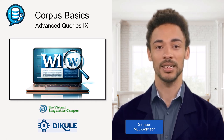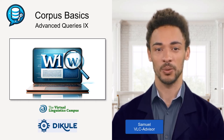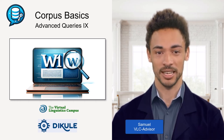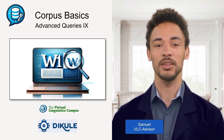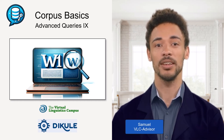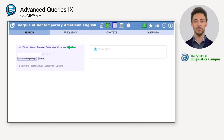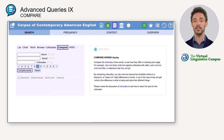Hello and welcome back. Let us look at the compare function in this video. With this function you can compare the collocates of two words, which can be useful to figure out slight differences between them. A prerequisite for such a comparison is that both search terms have the same number of words. Let's look at the two adjectives 'utter' and 'sheer' to demonstrate the comparison.